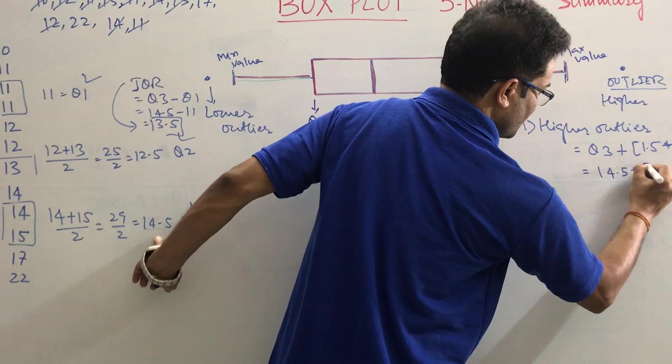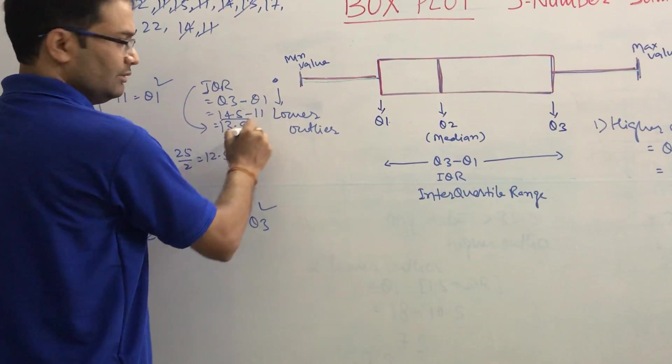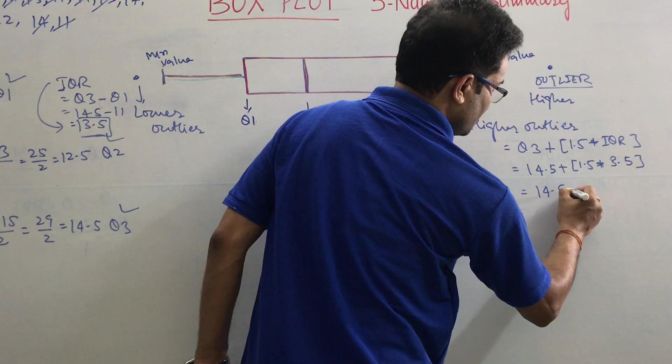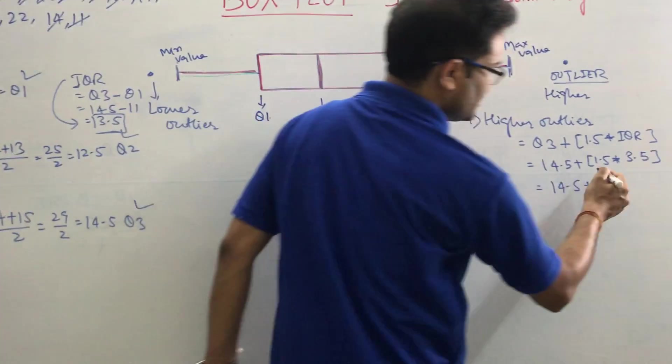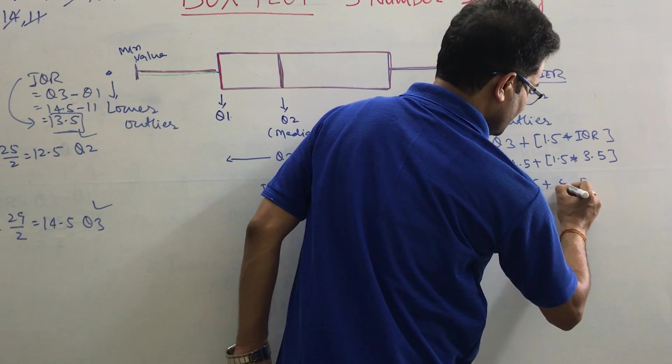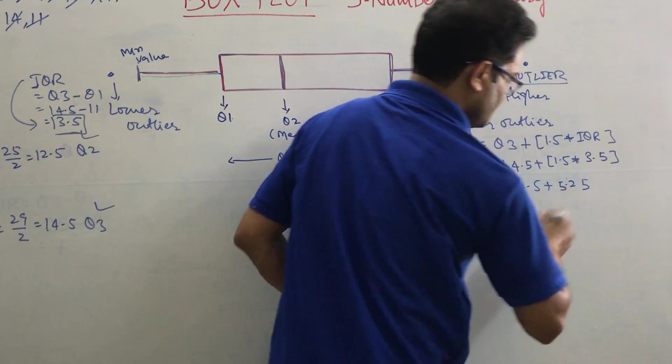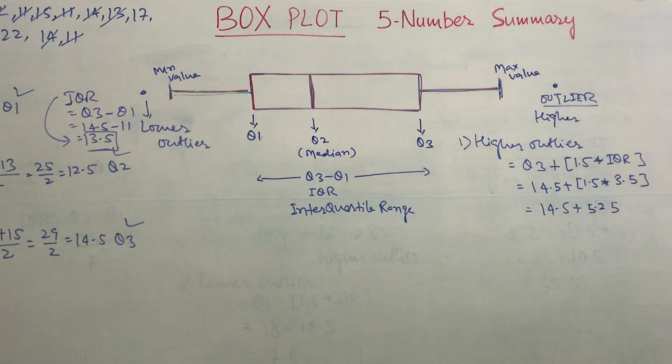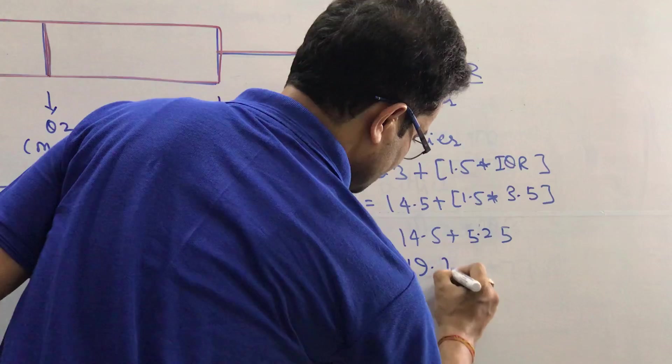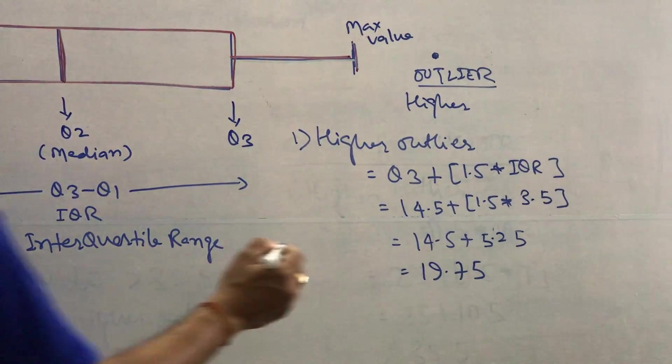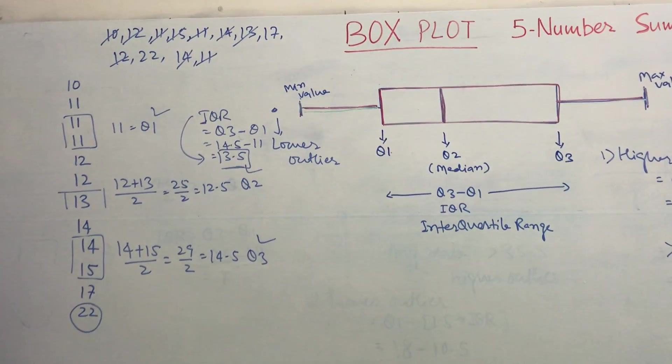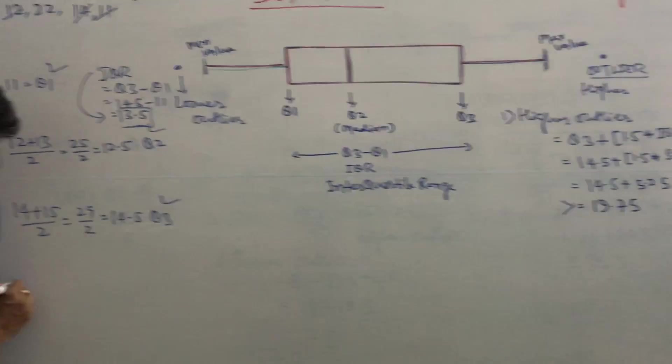So we have Q3 here, 14.5 plus 1.5 times IQR. The IQR is 3.5. Let me do this: 5 times 7 is 35, carry 7, 52... it should be correct. Let me check. 5.25, yes. Total it is coming to 19.75. Any data more than 19.75 in your data set is an outlier. Check: yes, we got one data—22 is the outlier, because it is more than 19.75.